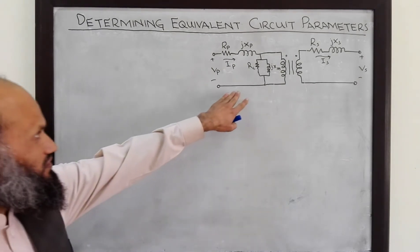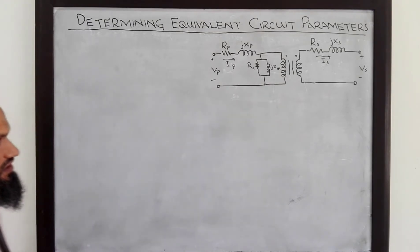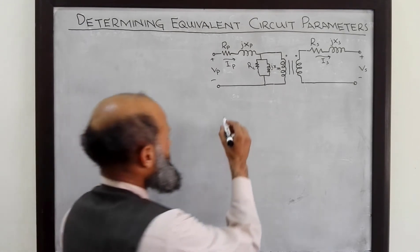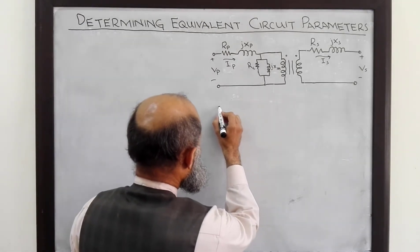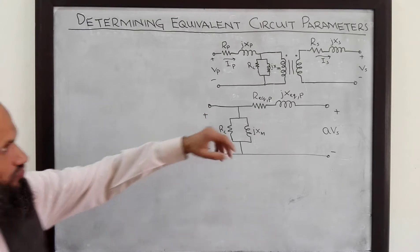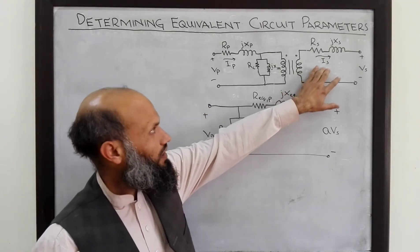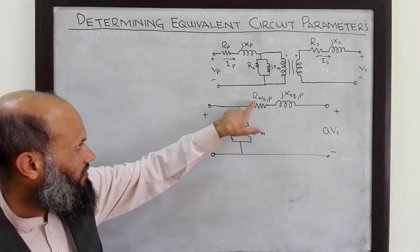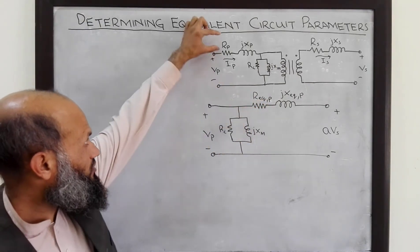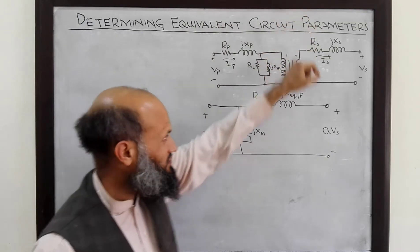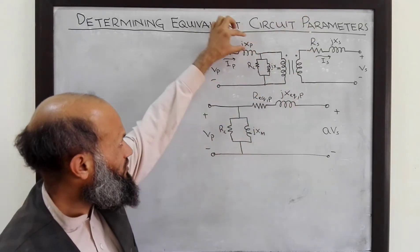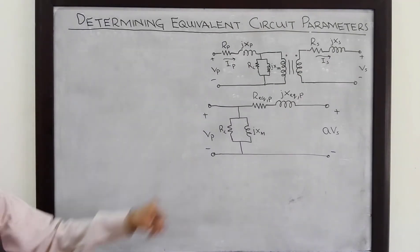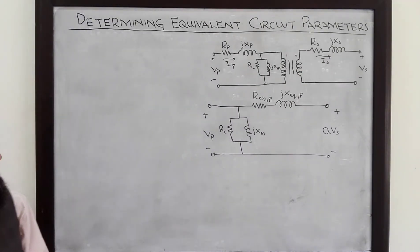Furthermore, this equivalent electrical circuit can be redrawn and simplified by referring all quantities to the primary side. Here R_eq primary is obtained from the primary and secondary resistances, and X_eq is obtained from the primary and secondary inductive reactances. All these steps were explained in the previous lecture.